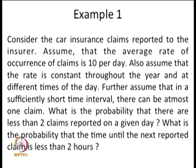We started with this problem of car insurance claims reported. The claims are events occurring over time. With the assumption that in a sufficiently small interval at most one claim can happen, and that the average rate of occurrence is constant throughout time, we can think of a sort of arrival process — a pure birth process satisfying some conditions — that may lead into the Poisson process. We will consider this same example again later.